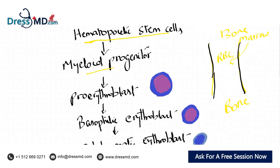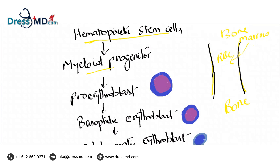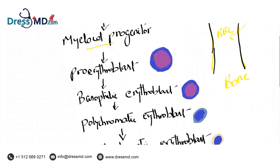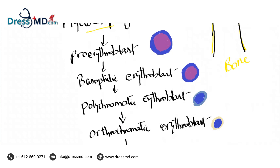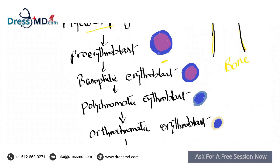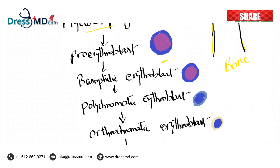Whenever cells are naive or immature we call them blast cells. As you can see from the picture, as the cell matures the size of the cells decreases. If you look at the proerythroblast picture, you can see the cytoplasm of the erythroblast is blue, because most blast cells are blue, and this is the nucleus — a big nucleus — because this is the first premature cell of the RBC series.